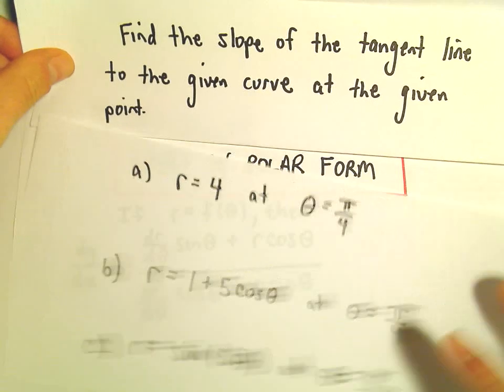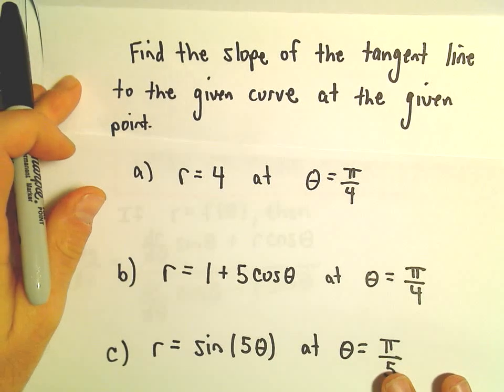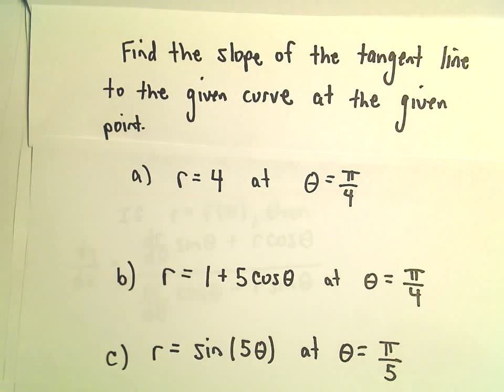So here we're just going to find the slope, just some examples of finding the slope of the tangent line to the given curve at the given point.